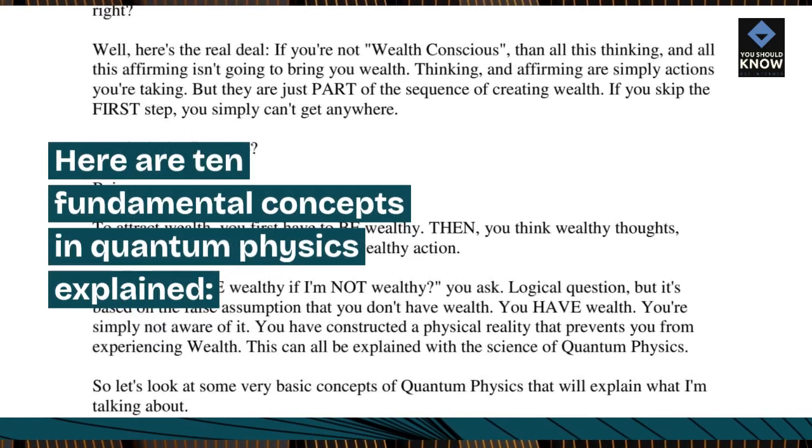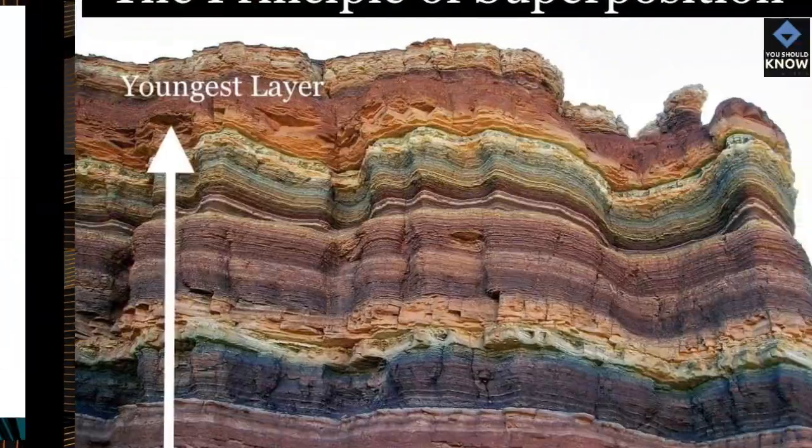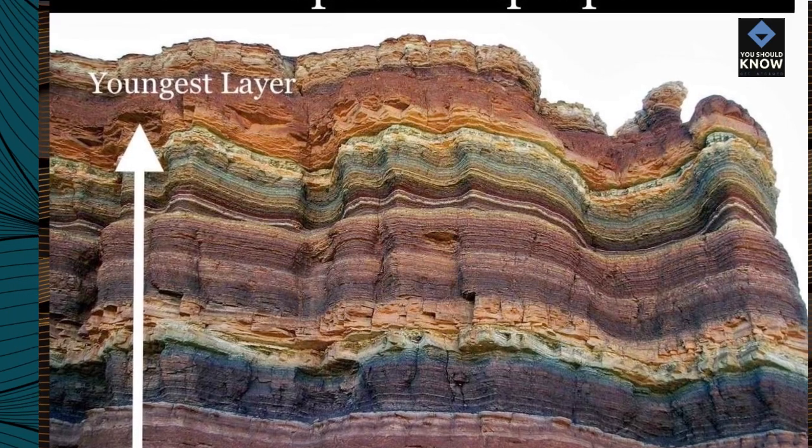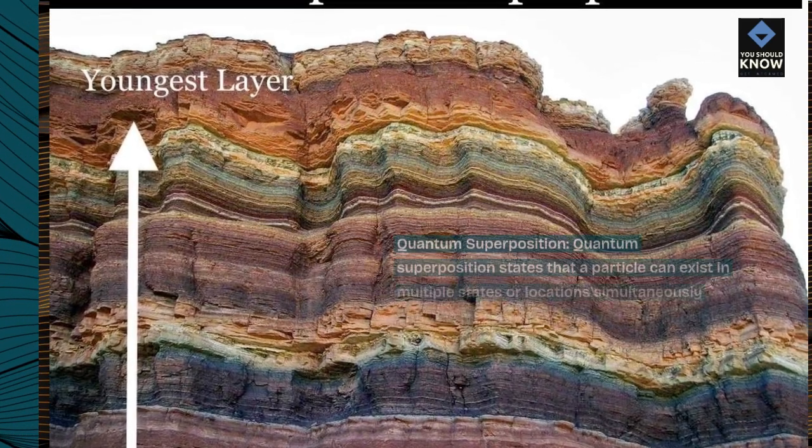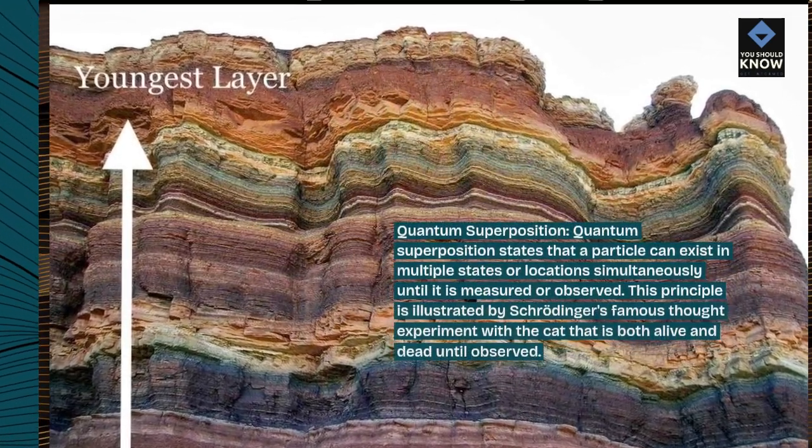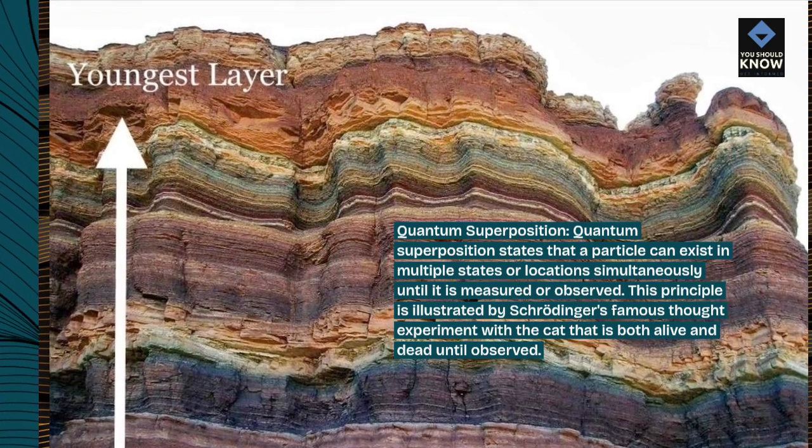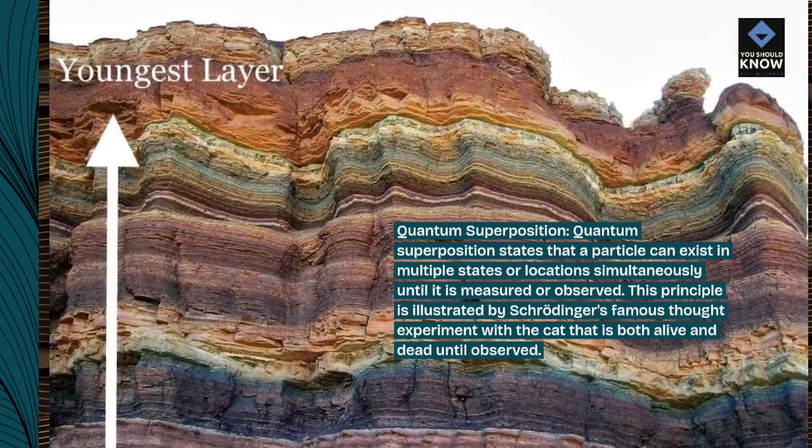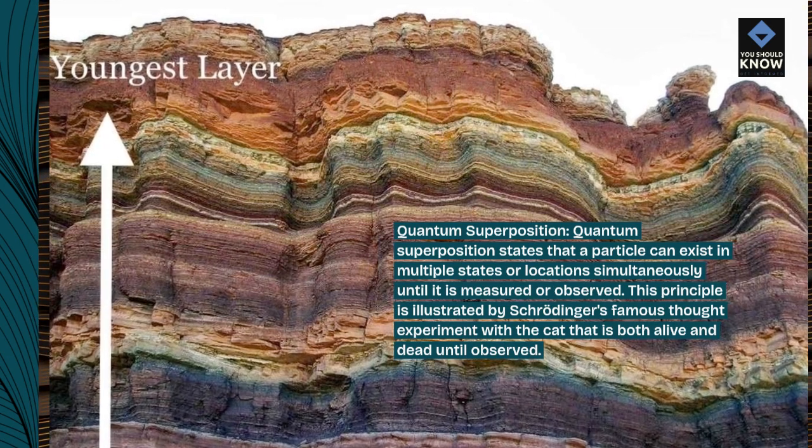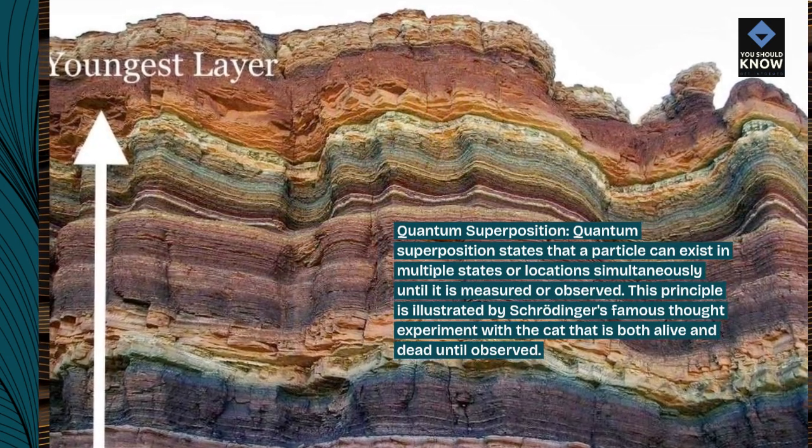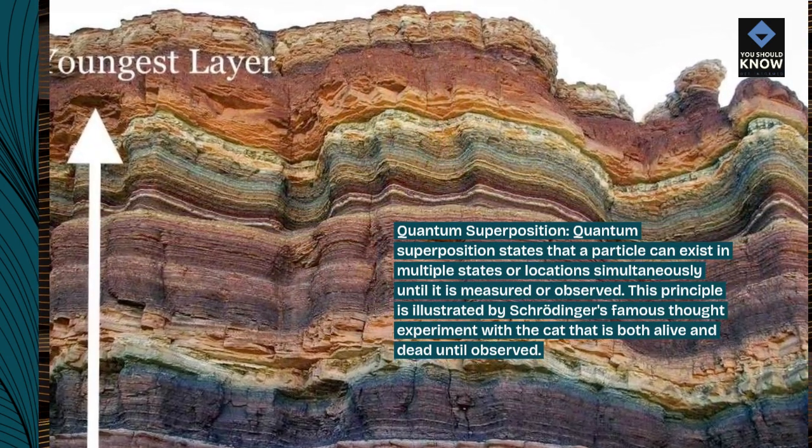Here are 10 fundamental concepts in quantum physics explained. Quantum superposition states that a particle can exist in multiple states or locations simultaneously until it is measured or observed. This principle is illustrated by Schrodinger's famous thought experiment with a cat that is both alive and dead until observed.